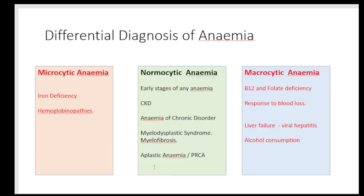When we see microcytic anemia — where the size of the RBCs is smaller than the nucleus of a small lymphocyte — the two major differential diagnoses that come to mind are iron deficiency anemia and hemoglobinopathies. When we're talking about microcytic hypochromic anemia, we are looking basically for either iron deficiency anemia or hemoglobinopathies.